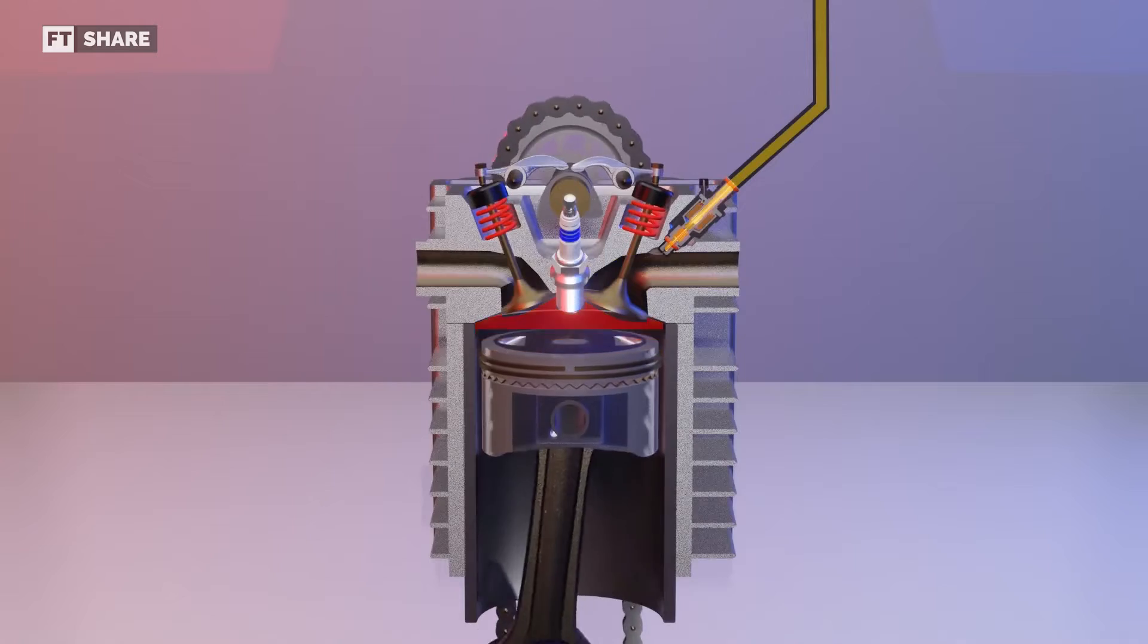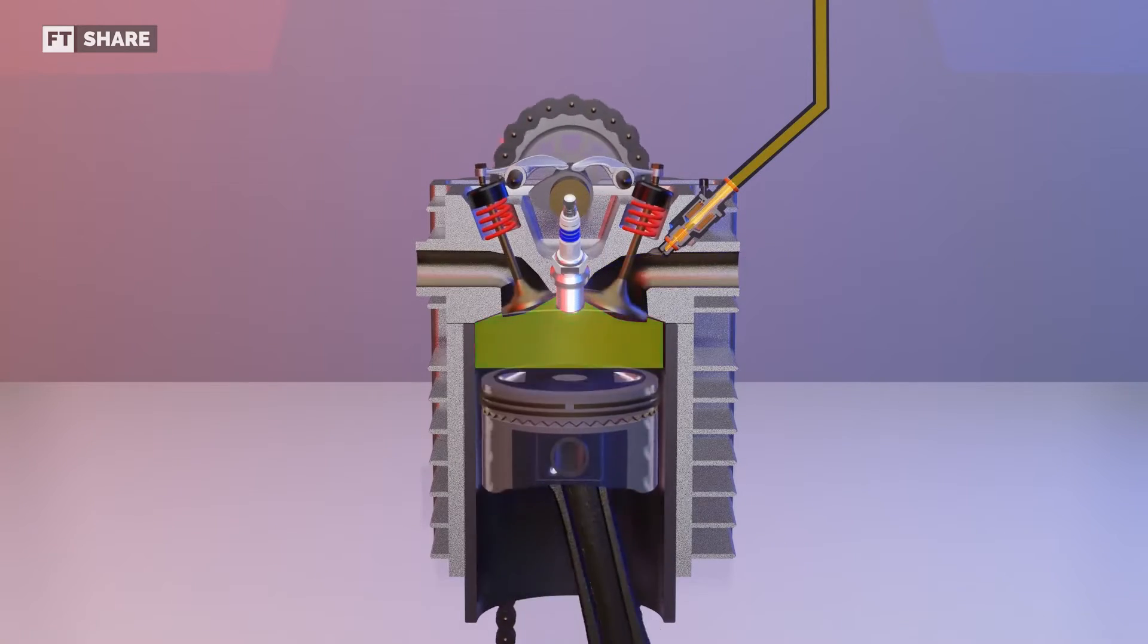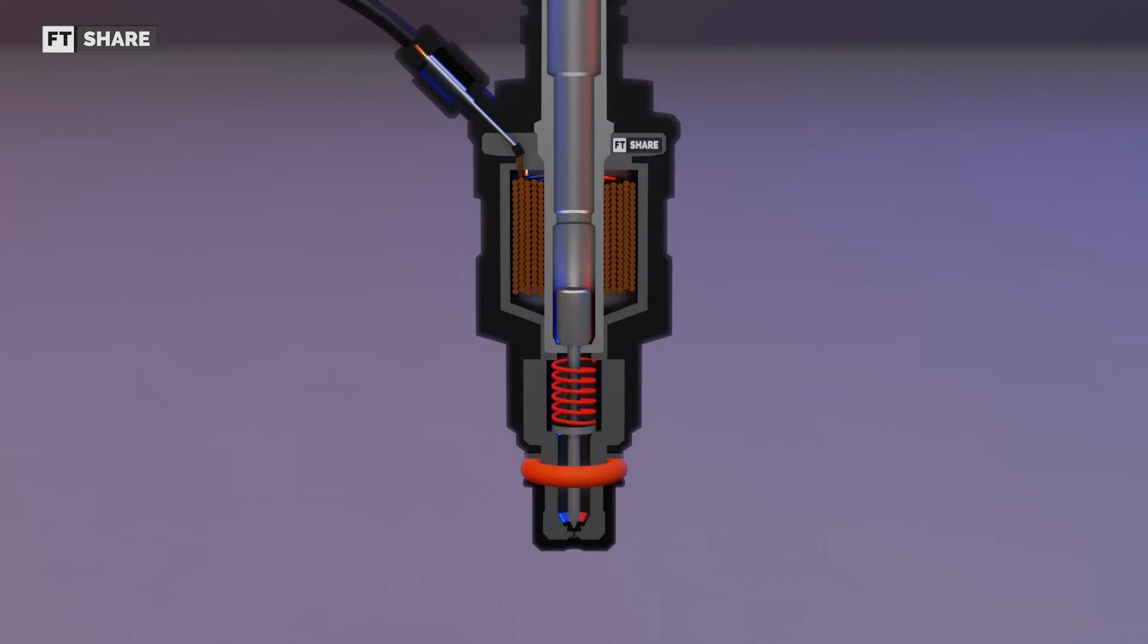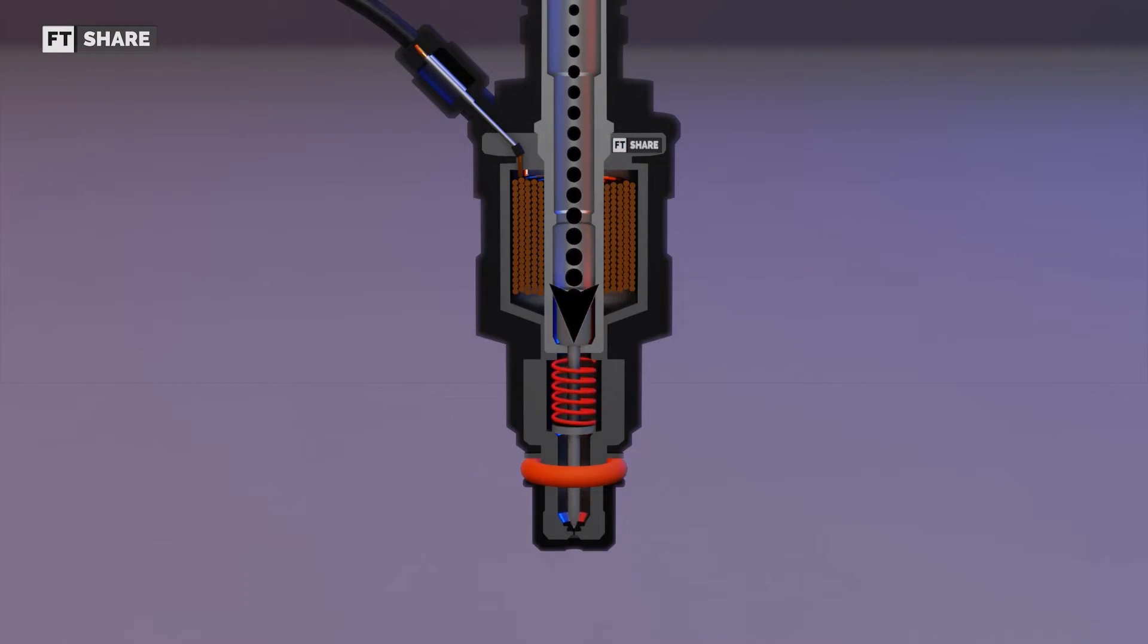Now to the mechanism of action. The injector will start working when the engine is started, where the gasoline pump will pump with high pressure until it fills the entire injector channel, usually in the range of 3 to 7 bar, depending on the condition, type, and also engine capacity.